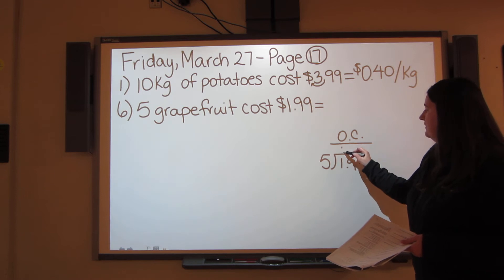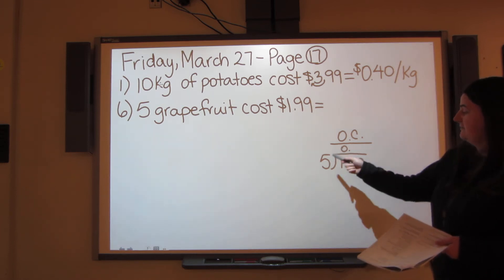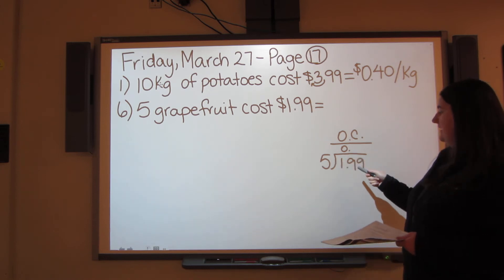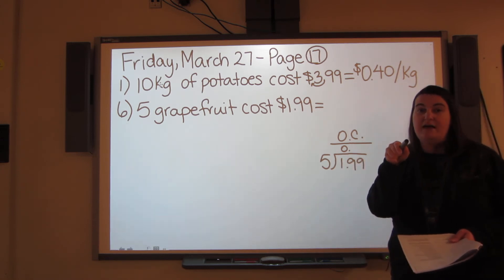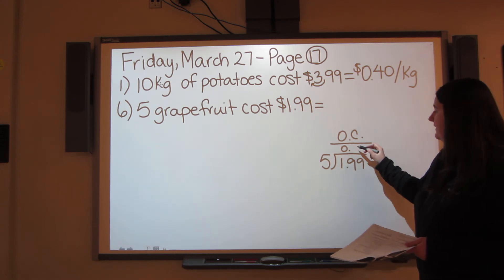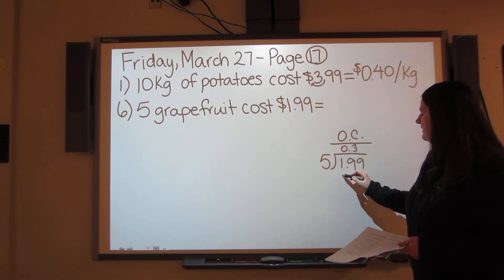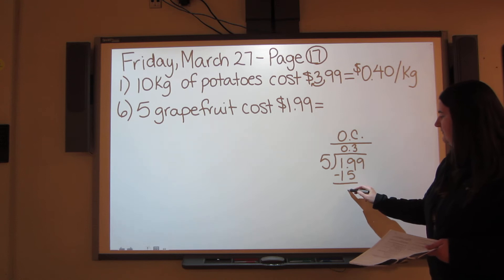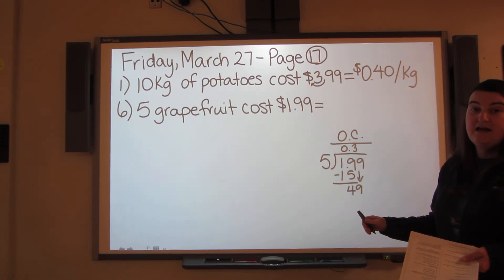Now, can 5 go into 1? No. So you've got a 0 and a decimal. Can 5 go into 19? Absolutely. 5 can go into 19 if you look down your 5s, until you get to the closest thing to 19, without going over. So 5 goes into 19, 3 times. 5 times 3 is 15. 4 left over. Drop your 9.